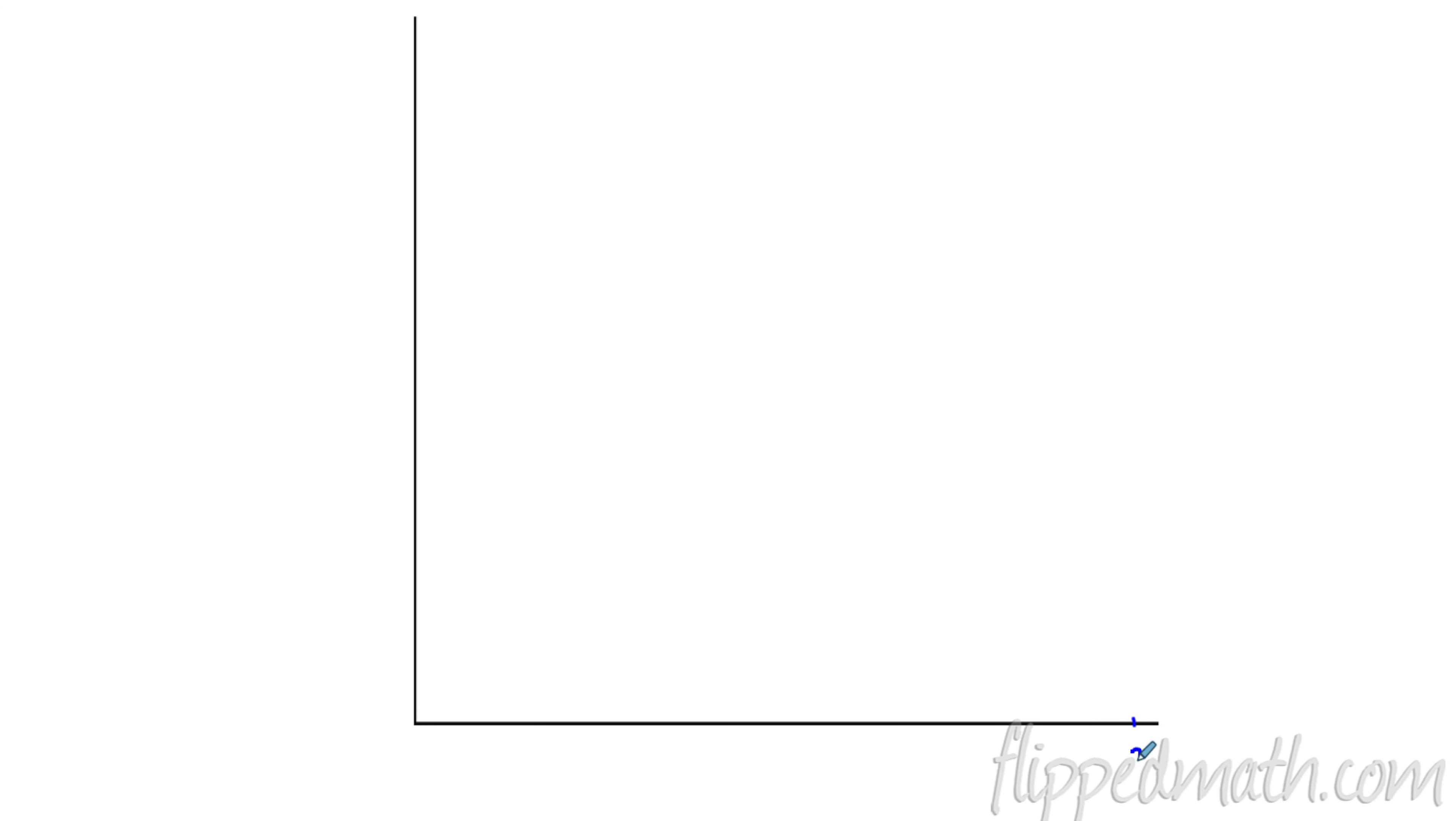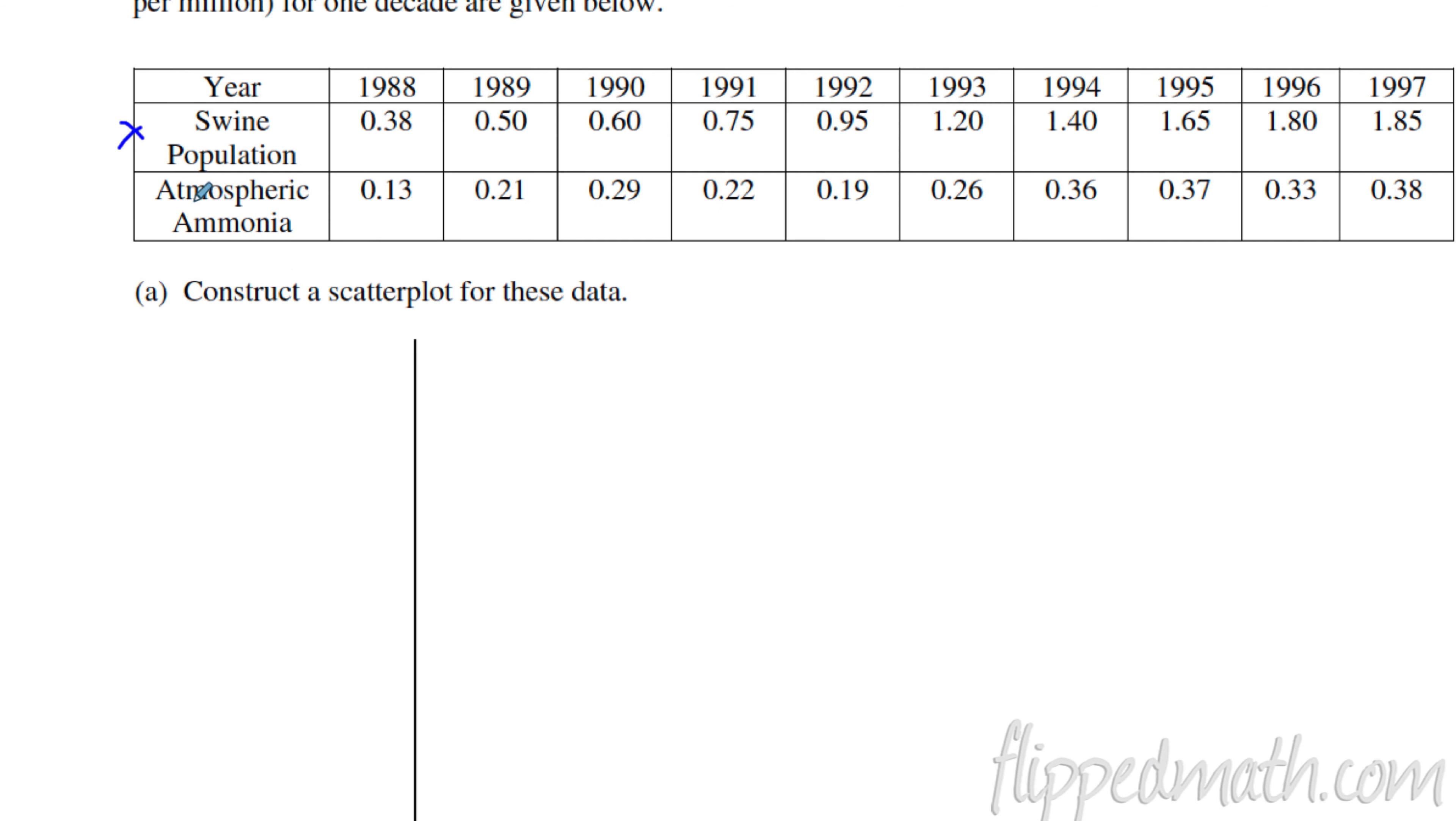But the good news is when you look at the solution guide, when you construct your scatterplot, they give you three different options. I would not do the last one where you have two scatterplots on one. That is not the point of this question. I would pick one of the first two. As I said, this would be the one that's probably most popular. Based off of the swine population, this is what the atmospheric ammonia is.